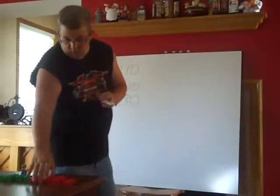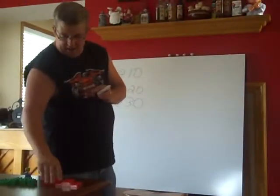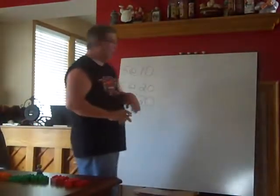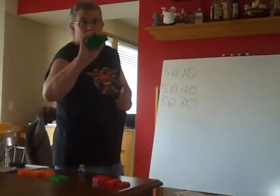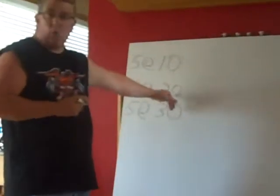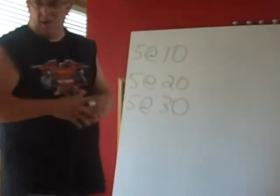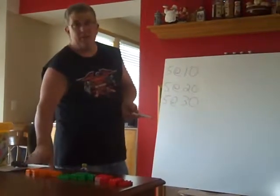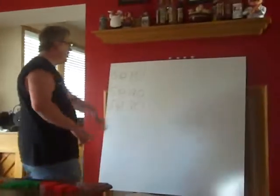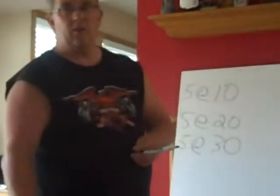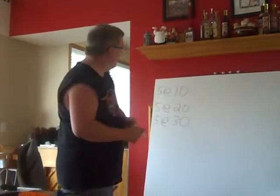We have five red Legos, and the cost of those five red Legos is $10 a piece. The green ones — we have five green items, and those cost us $20 a piece. And finally, we have five orange Legos. Same product, but those cost us $30 a piece. So we are in an inflationary period.